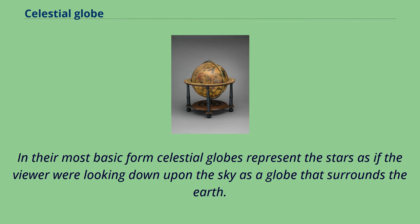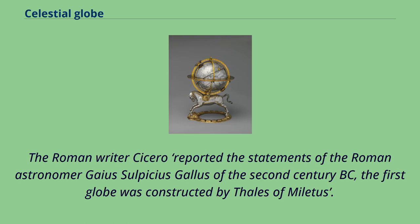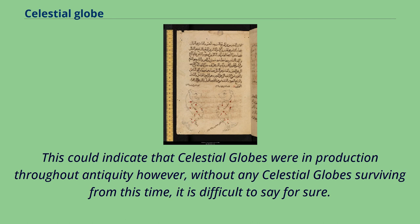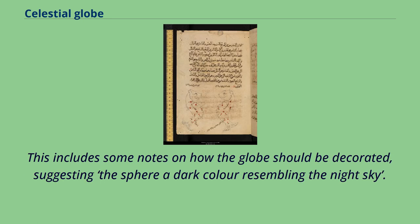In their most basic form, celestial globes represent the stars as if the viewer were looking down upon the sky as a globe that surrounds the Earth. The Roman writer Cicero reported the statements of the Roman astronomer Gaius Sulpicius Gallus of the 2nd century BC that the first globe was constructed by Thales of Miletus. In Book 8, Chapter 3 of Ptolemy's Almagest, he outlines ideas for the design and production of a celestial globe, including some notes on decoration, suggesting the sphere be painted a dark color resembling the night sky.